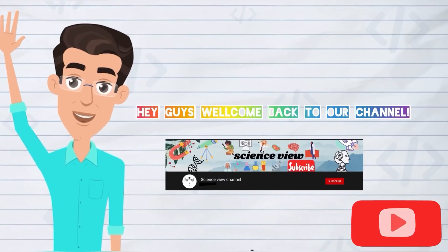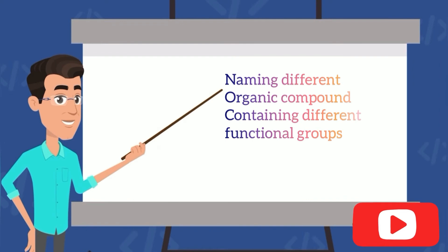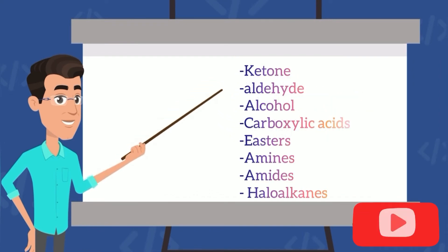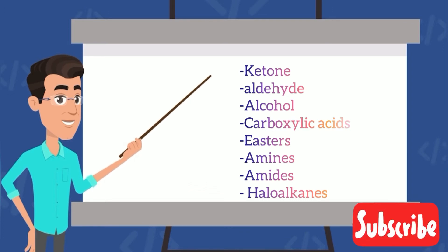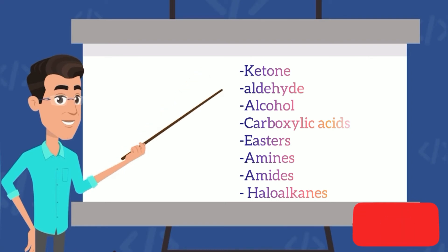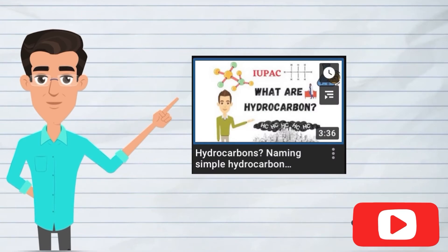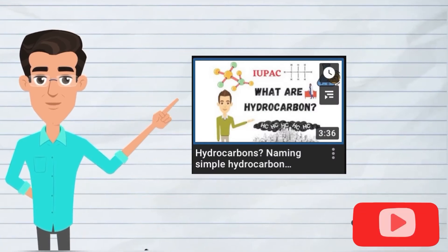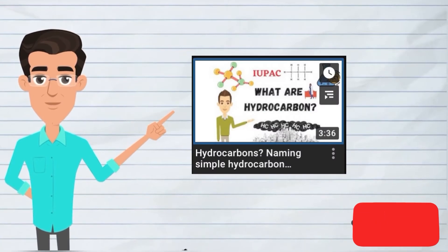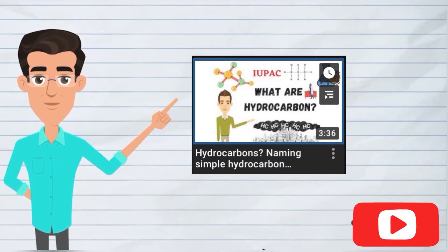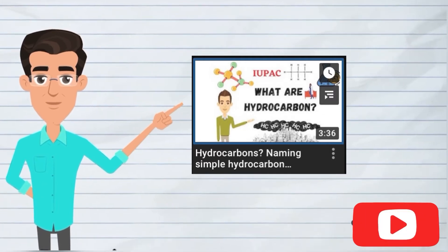Hey guys, welcome back to my channel. In this video you will learn how to name complex molecules containing different functional groups, including ketone, aldehyde, alcohol, carboxylic acids, esters, amines, amides, and haloalkanes. If you do not have knowledge of how to name basic components, please watch the part 1 video first so you can have pre-knowledge about this topic.